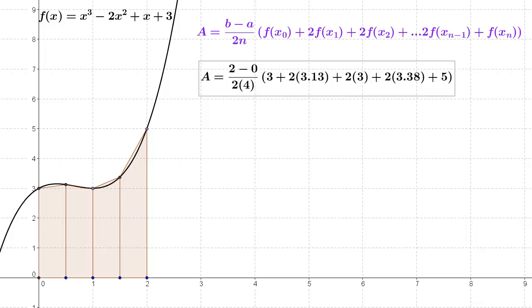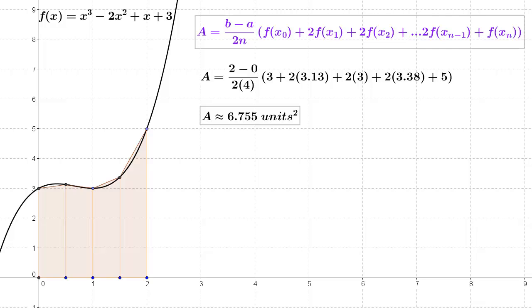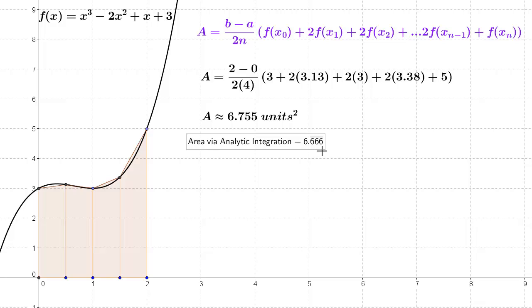When we compute that, we get an area of 6.75 units squared. Now that's not an exact area because there is a little bit of error, but it's a pretty good approximation. If we try to analytically integrate this, we would find an area of 6.6 repeating. So we're only off by about 0.1, a little bit less than 0.1 square units, which is pretty darn good considering we only had four trapezoids.